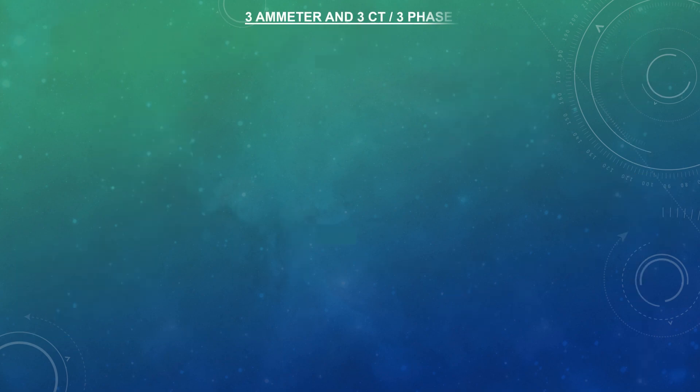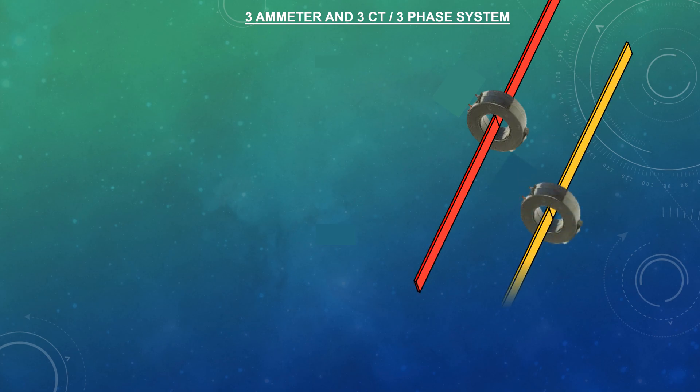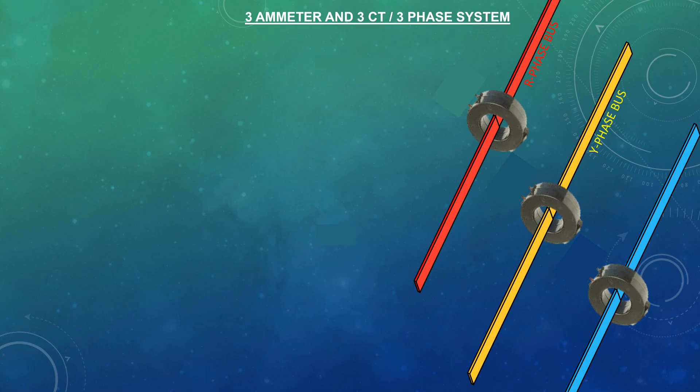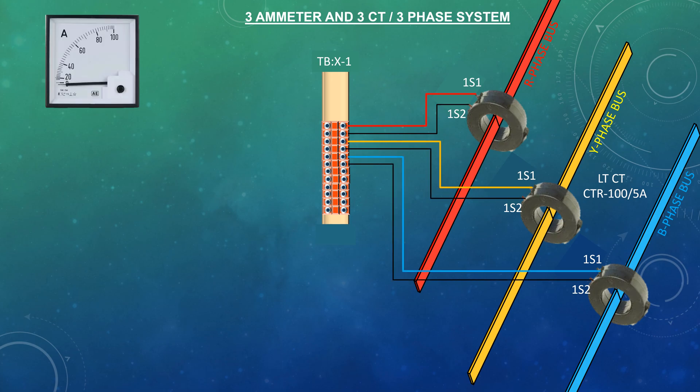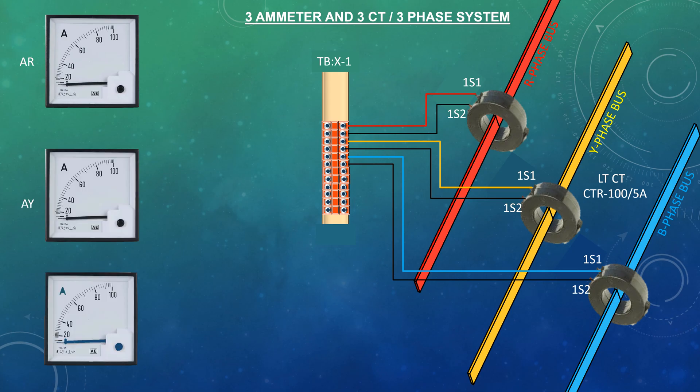To measure three-phase current, the shown arrangement is to be followed. Three CT and three ammeter are required for three-phase current measurement.